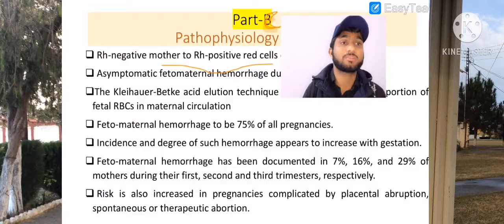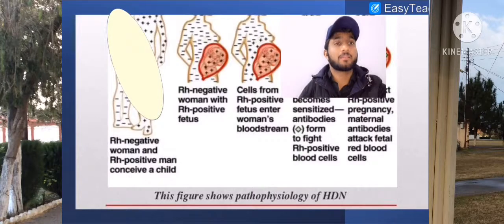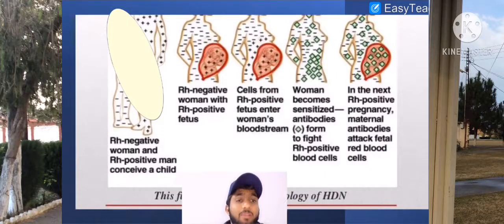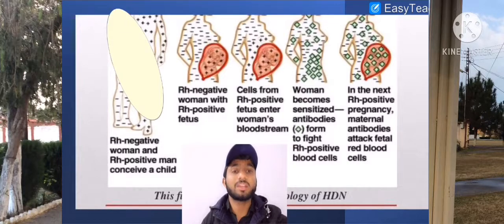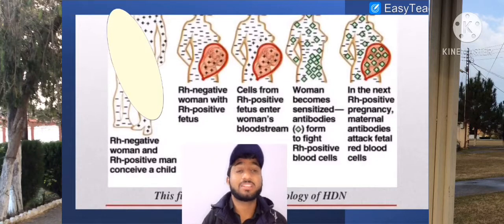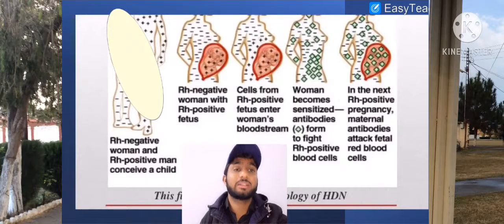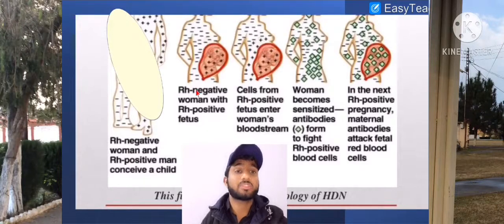Other factors are also responsible to initiate or stimulate HDN. Here we have a diagram to explain the pathophysiology of HDN in summary. We can see that an RH negative woman and an RH positive man conceive a child. According to Mendelian law, there will be chances of an RH positive fetus.